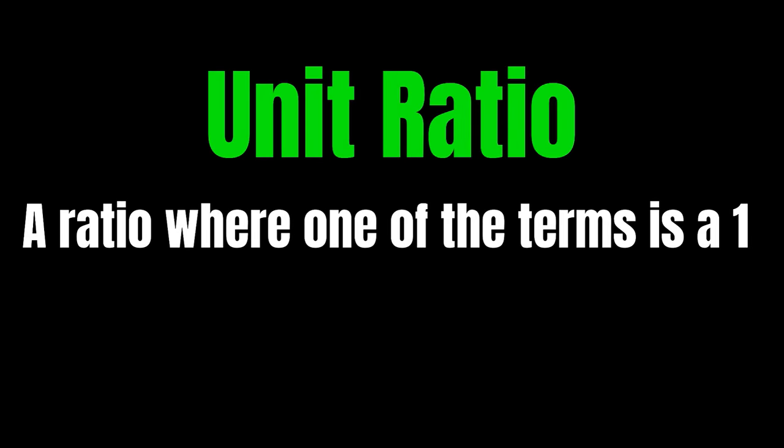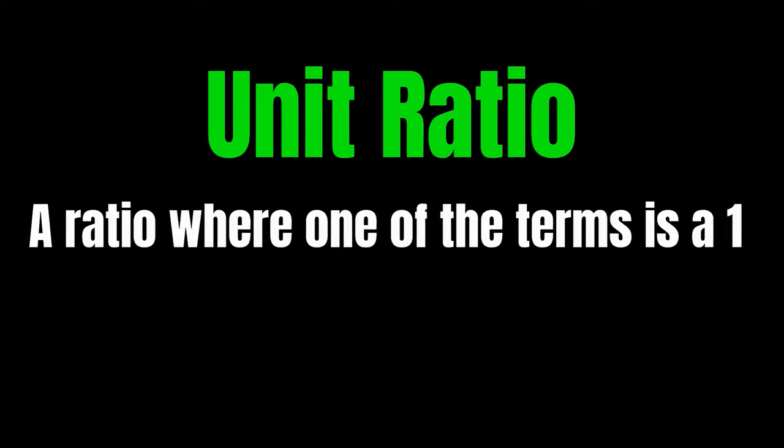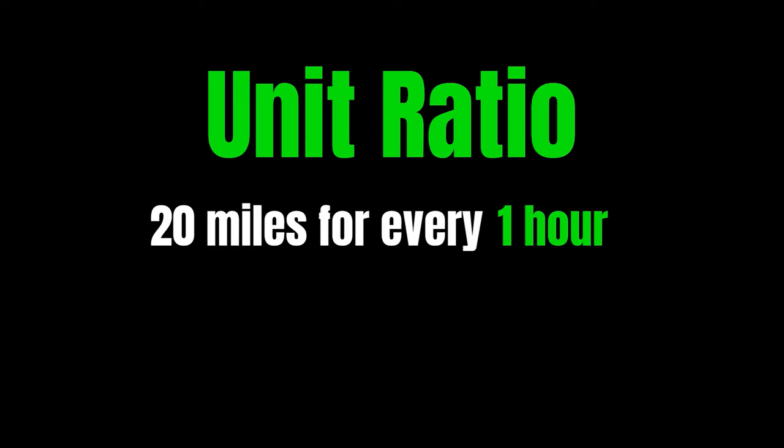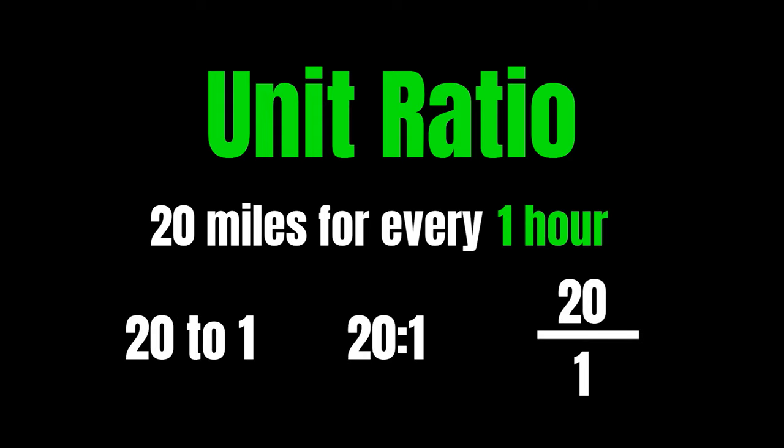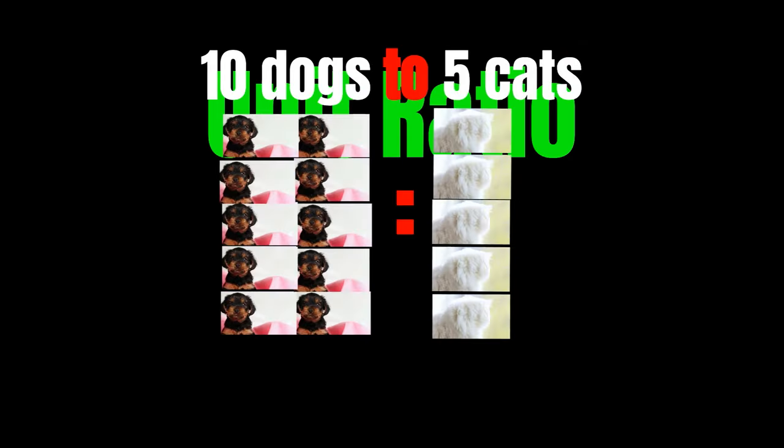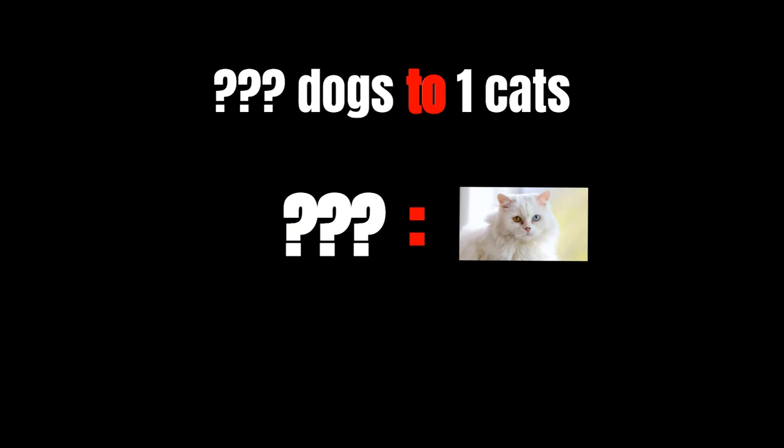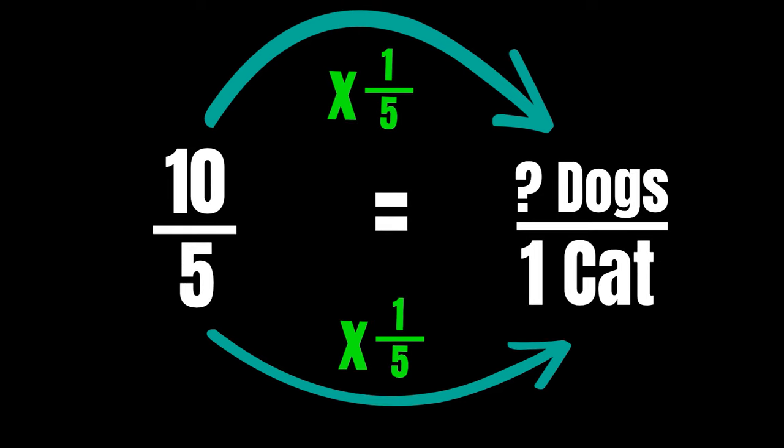So let's learn about the unit ratio, an equivalent ratio that contains a one. Using these to solve problems can be fun. Ten dogs to five cats is a little too many, I think one cat is just about plenty. Use your scale factor to turn five cats into one. That makes only five dogs.